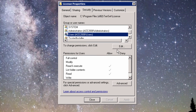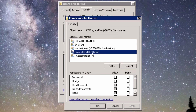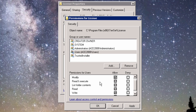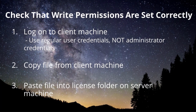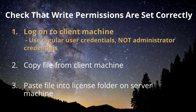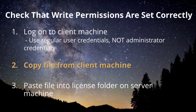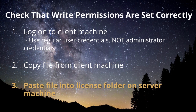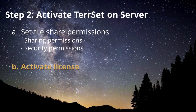Let's go on to the Security tab. Make sure that all relevant groups and users have, at minimum, Read and Write permissions to the license folder. If you are unsure that permissions are set correctly, you can easily test them by logging on to a client machine as a regular user, not an administrator, and attempting to copy a file from the client into the license folder on the server machine. If you are able to do this, the server write permissions are set correctly.